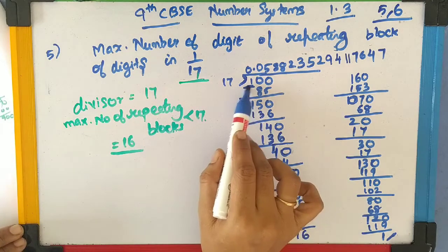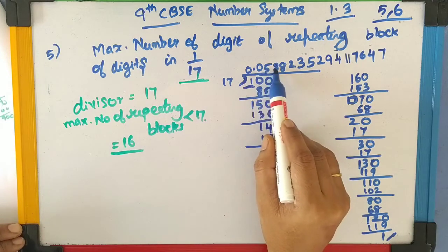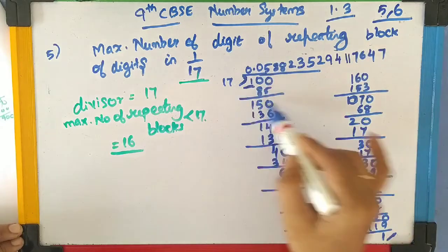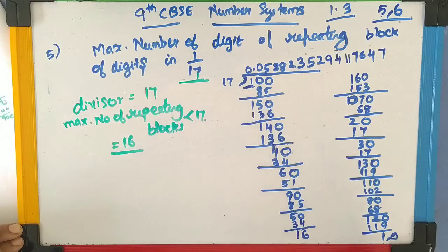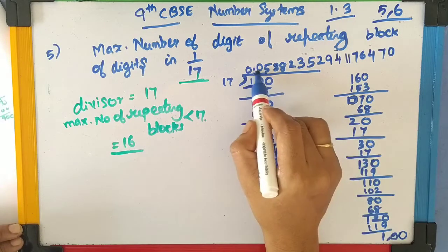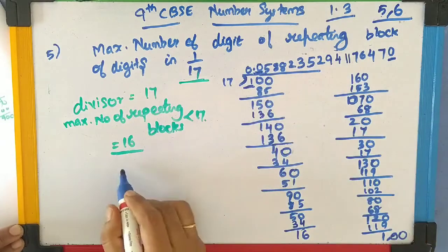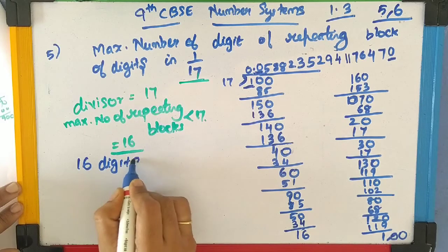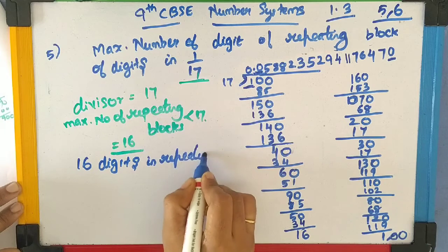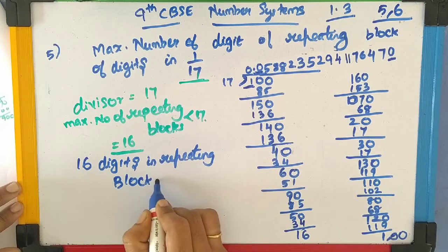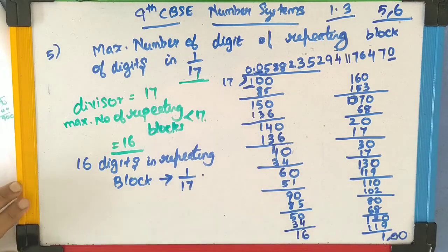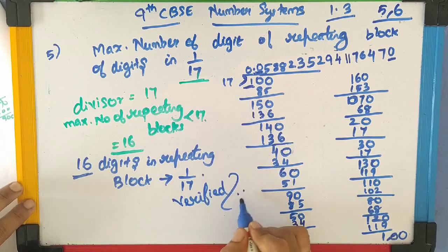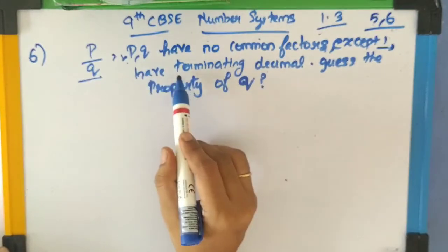So I can get the repeating blocks. The digits after the decimal point will repeat when the same number as the numerator appears again as the remainder. Here 1 is not divisible by 17, so I add a 0 and continue the same procedure. Now we count the digits in the decimal — it equals 16. There are 16 digits in the repeating block of digits when we divide 1 by 17 by long division method. We have verified that the maximum number of repeating blocks is less than 17, which equals 16. Practice this sum at home so you can get a clear idea. Now let's go to the 6th question.